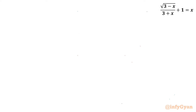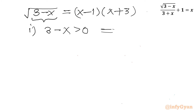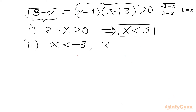Now let us figure out the conditions on x. From our equation — square root of (3 minus x) equals (x minus 1)(x plus 3) — the radicand must be non-negative, so condition 1: 3 minus x greater than 0, meaning x must be less than 3. Condition 2: the right-hand side must be positive, so (x minus 1)(x plus 3) greater than 0, which means x less than minus 3 or x greater than 1.